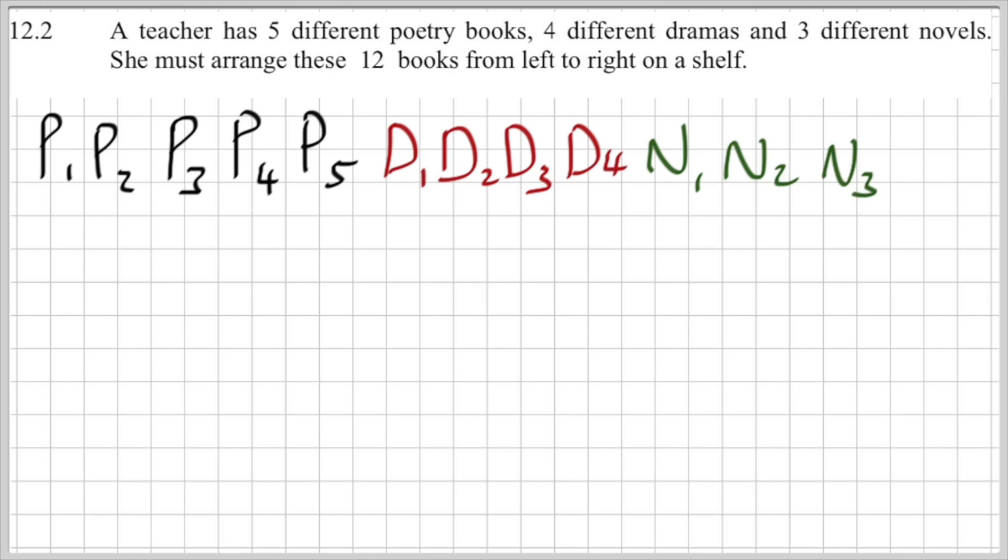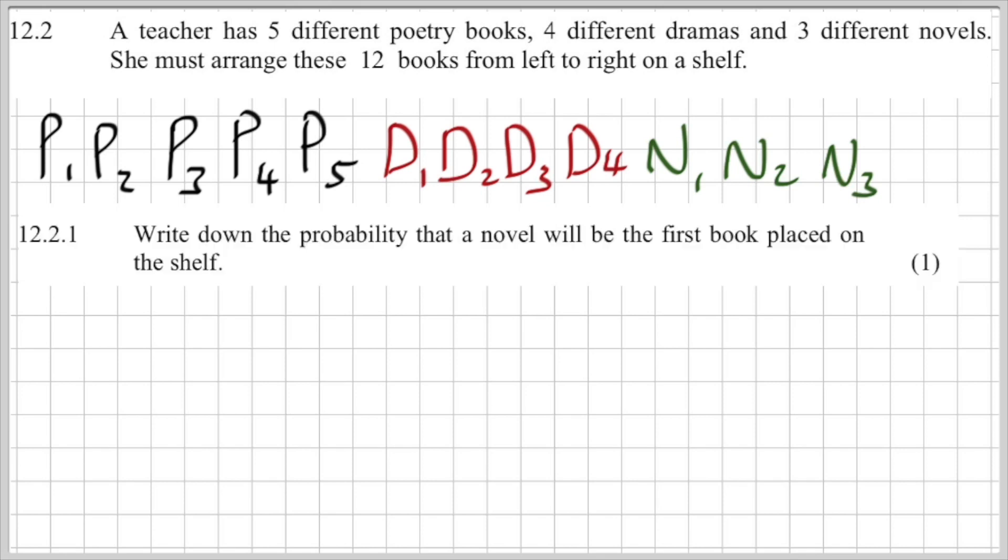She must arrange these 12 books from left to right on a shelf. The first question is really super simple and straightforward: write down the probability that a novel will be the first book placed on the shelf. How many novels do I have to choose from? Well I've got three, and how many books are there in total? There's 12 to choose from. So 1 over 4 or 0.25, and there's the first question. Remember it's only worth one mark.